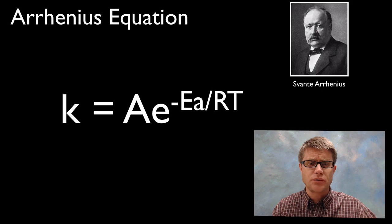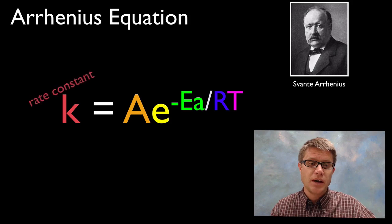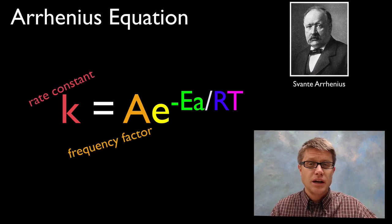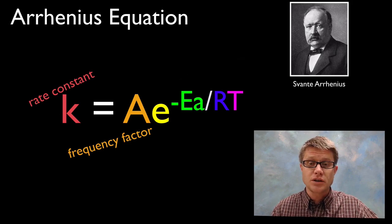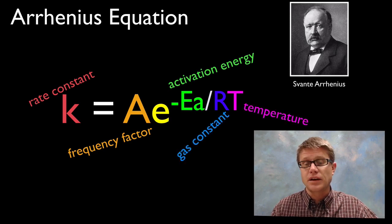The equation looks pretty scary, but if we make it colorful, it's not quite as scary. Breaking through the parts: K stands for the rate constant; A is the frequency factor, which is basically built on the amount of energy particles have in their proper orientation; we've got the activation energy; we've got the gas constant R; and finally we've got the temperature T.